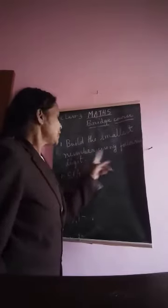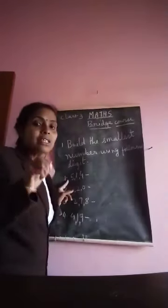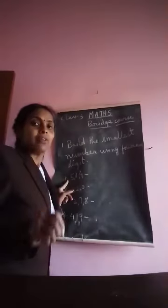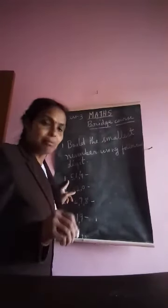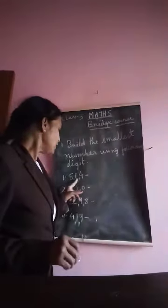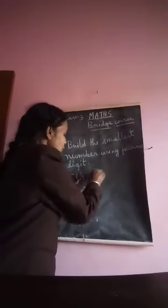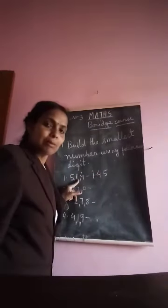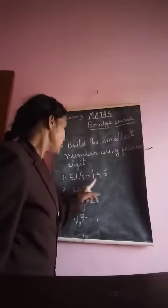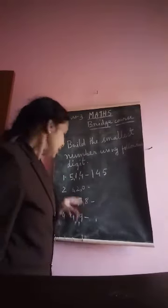Now, build the smallest number using the following digits. For making the smallest number, write the digits in increasing order. From digits 5, 1, and 4: smallest is 1, then 4, then 5. So 145 is the smallest number built using digits 5, 1, and 4.